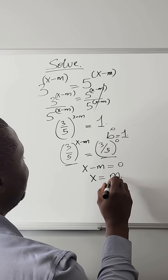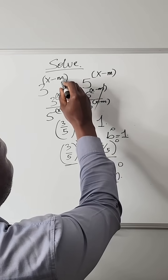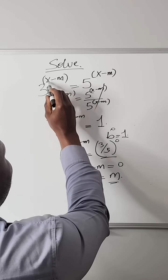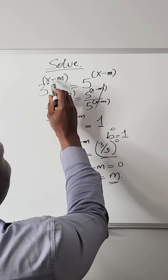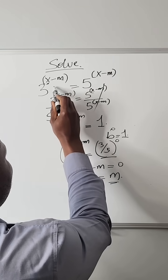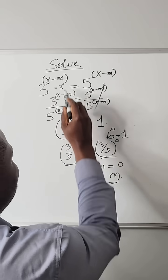Now if we plug in m here, since x is equal to m, we plug in m here, m minus m is 0. 5 raised to power 0 is 1.